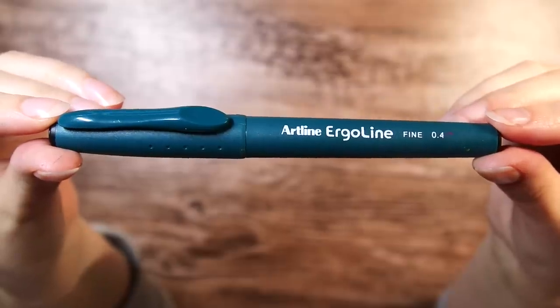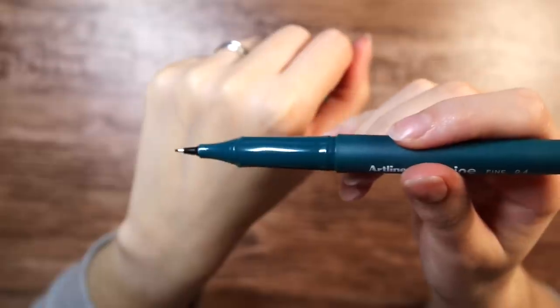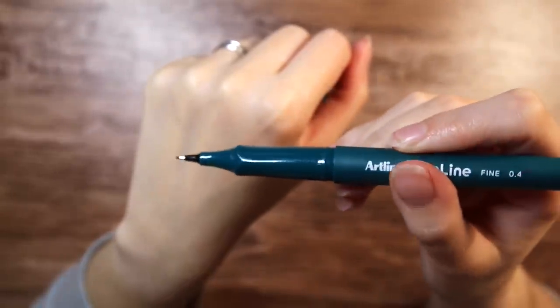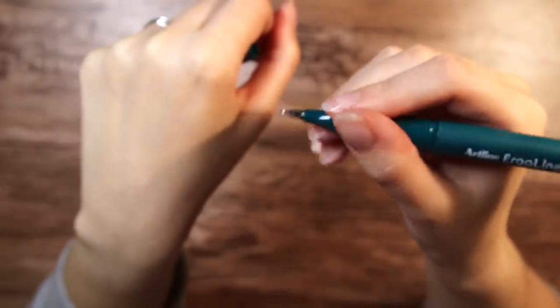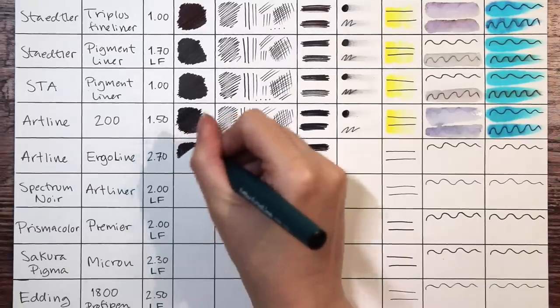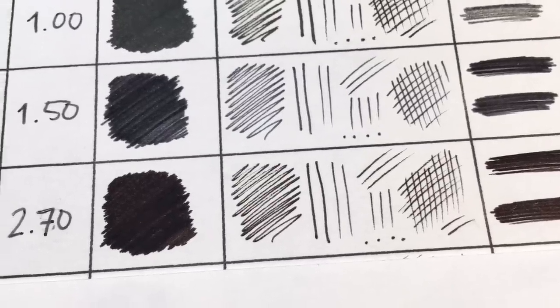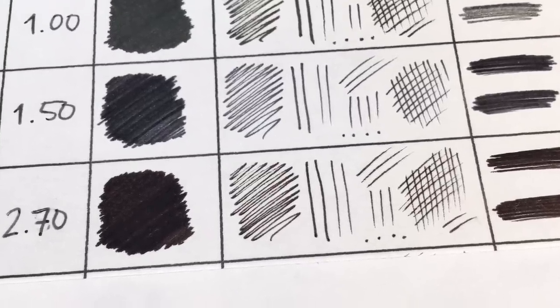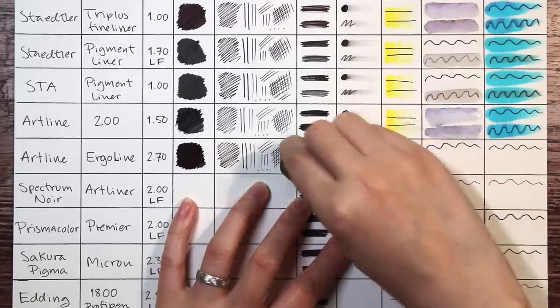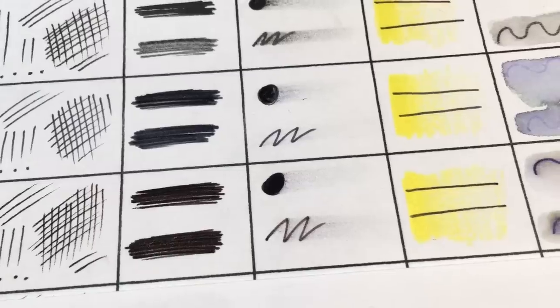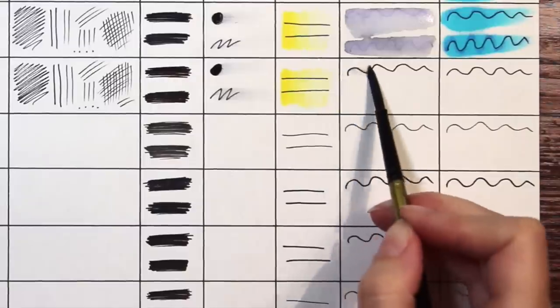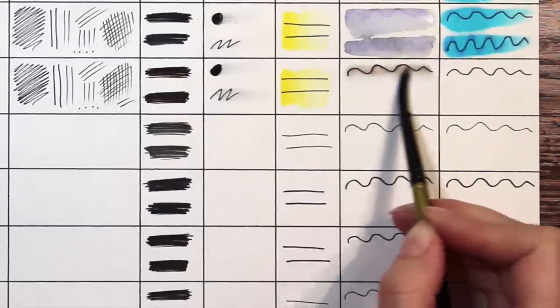Then we have another Artline pen that is called Ergoline for about $2.70. It is the thickest of the pens with an ergonomic grip. This one is way more pigmented than the previous Artline pen. The ink looks very even and dark. The lines turn out crisp and it holds up really well in the eraser test but yet again it is not suited for watercolors or markers.